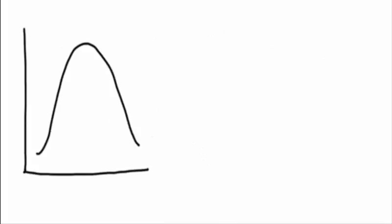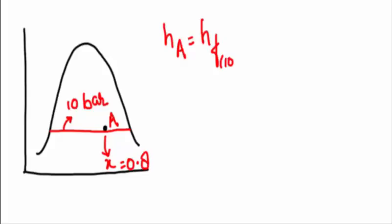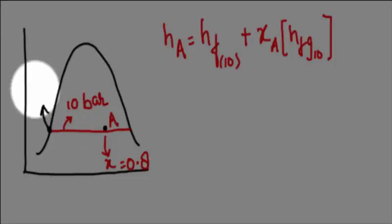Let's take a question. Suppose 10 bar pressure and dryness fraction 80% of a point A is given. Since dryness fraction is less than 1, the steam is in wet region and we have to apply the formulas. Which will be equal to: HA is equal to HF at 10 bar plus X at A into HFG at 10 bar pressure, where HF is enthalpy of this point.